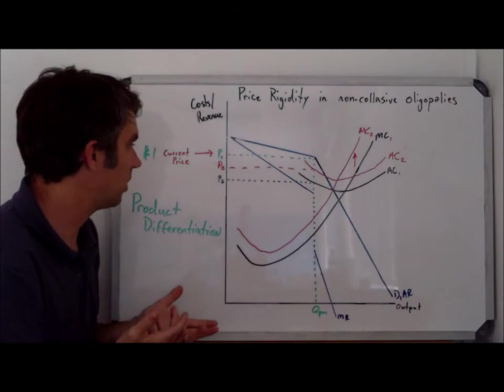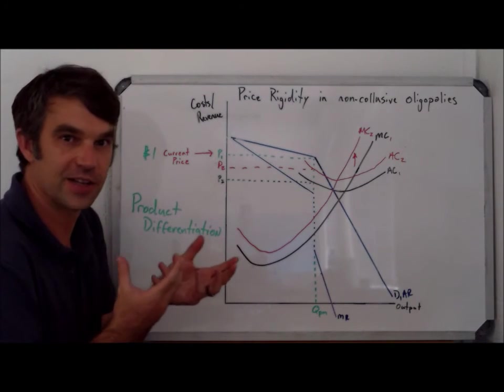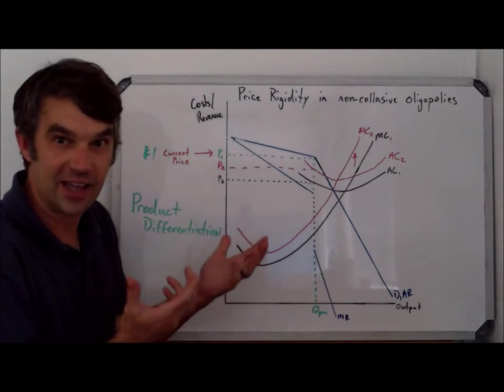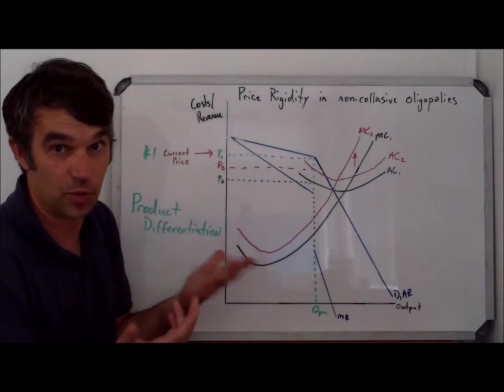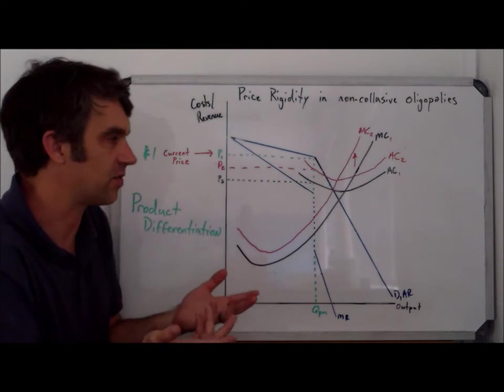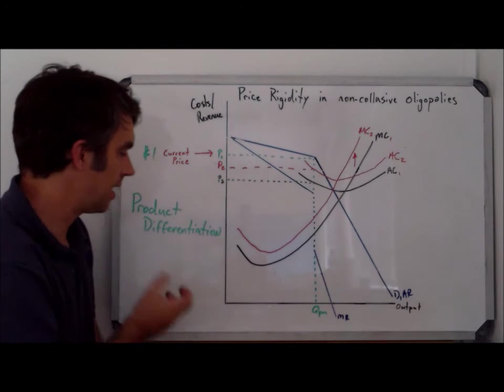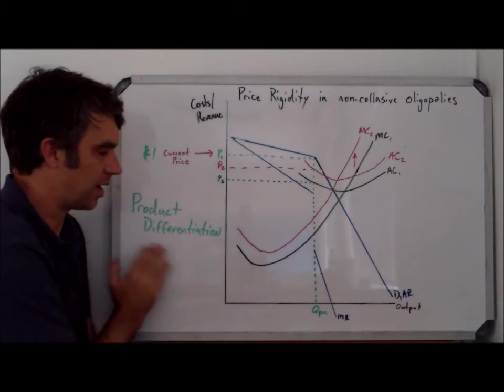To make matters even worse, remember that because they're in such a struggle with their competitor and they can't use one of the best things to compete on, which is price, which we just justified, then they have to spend their money on some other thing. And where that's going to be found is in product differentiation.